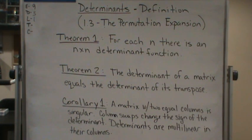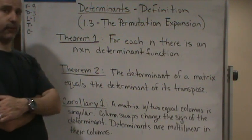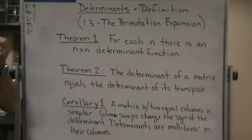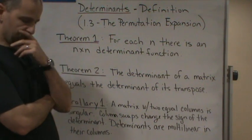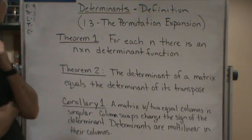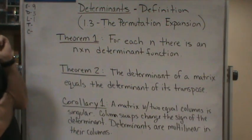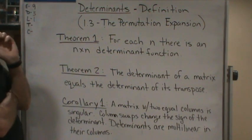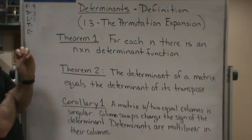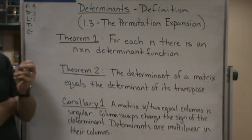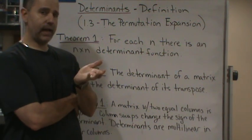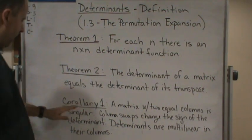Now the corollary follows from that because if we think of the row operations that we've been doing, all the things with respect to the rows, and we're saying that the determinant of the matrix equals the determinant of its transpose, then we can look at columns the same way. In fact, corollary one follows from these results.